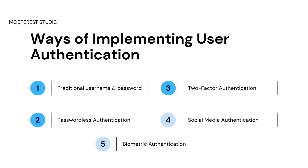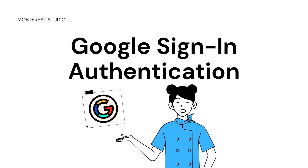Lastly, we have biometric authentication, where we leverage the device's biometric capabilities such as fingerprint or facial recognition. It is considered a good second factor for authentication. In our series, we look at integrating these authentication methods step by step in Flutter. Let's take a break here, and I'll see you in the first lesson where we'll be looking at Google Sign-In authentication with Flutter.